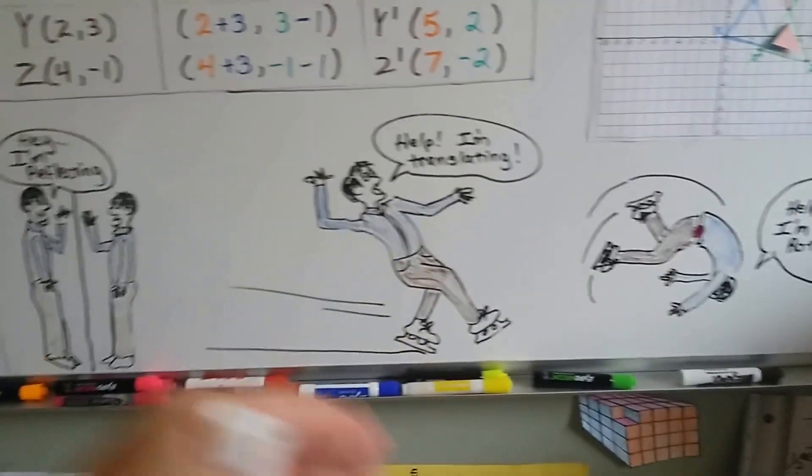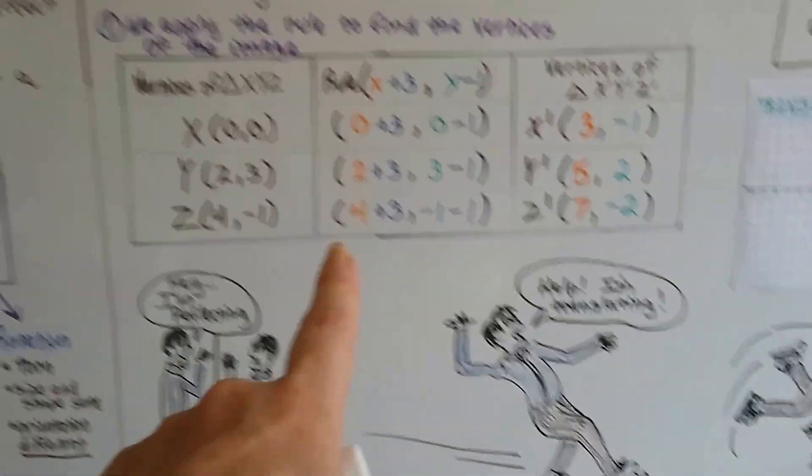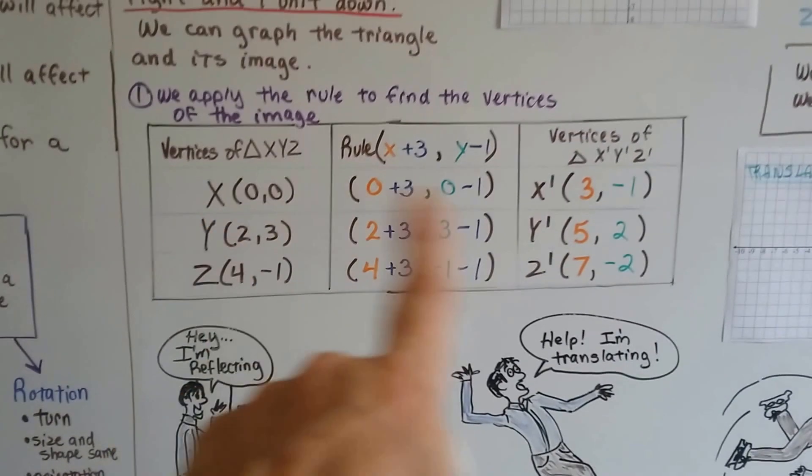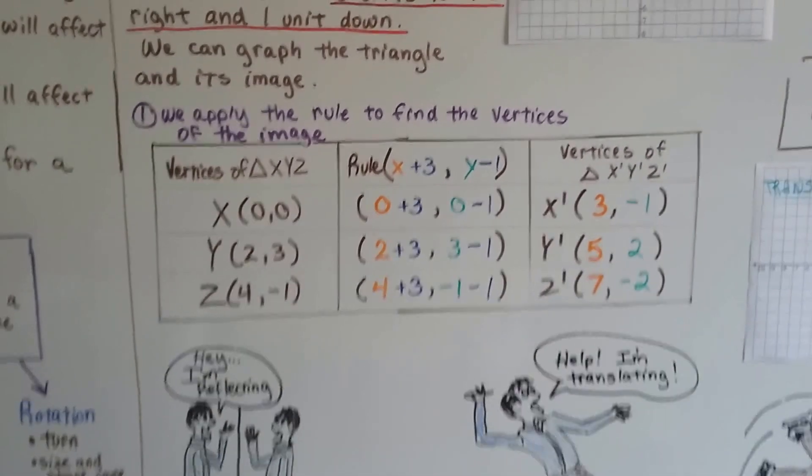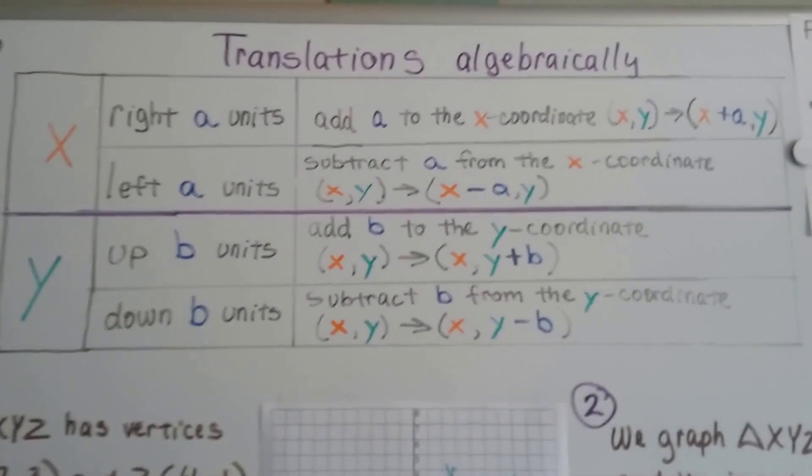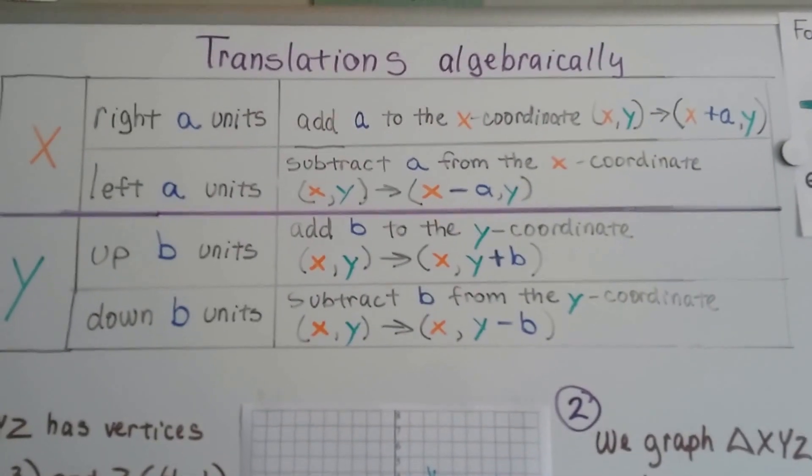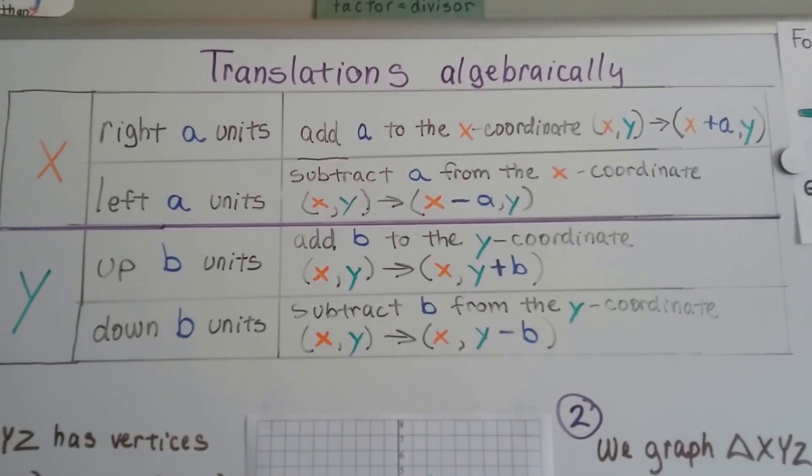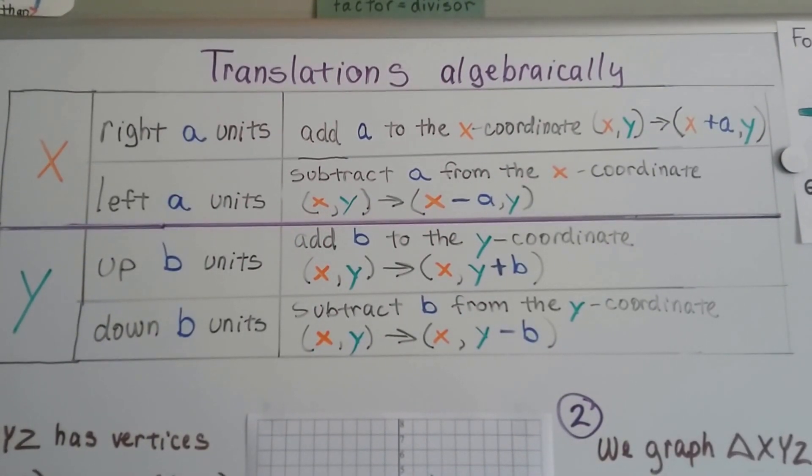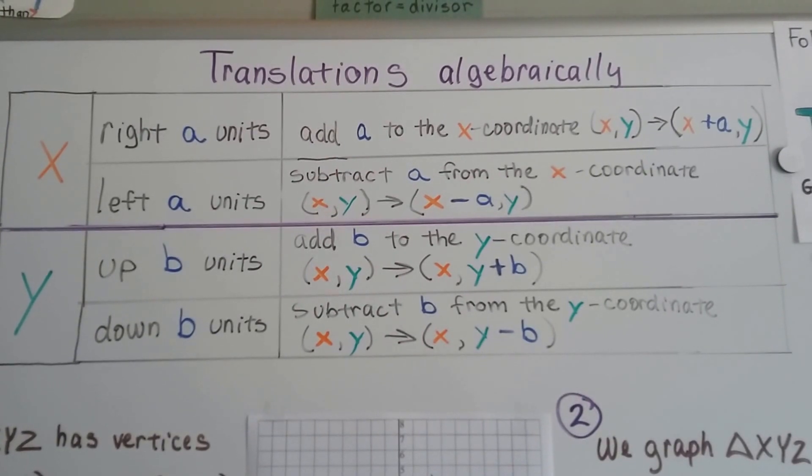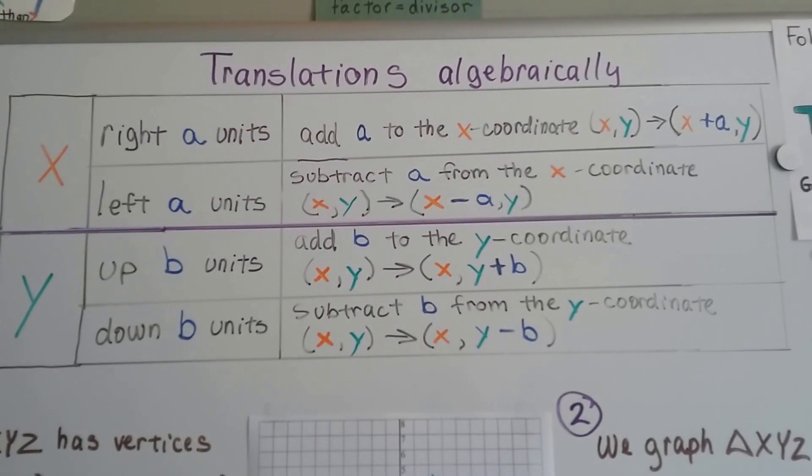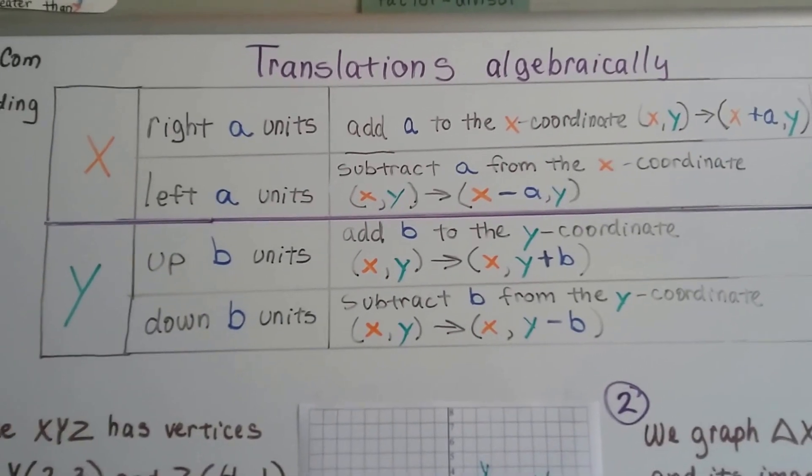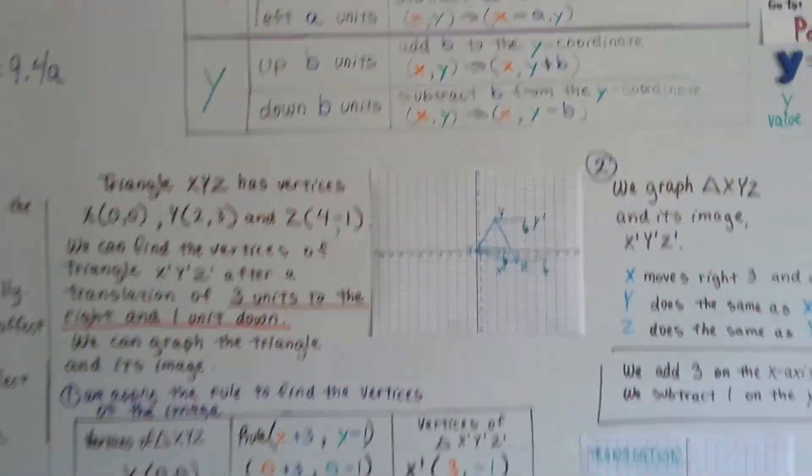He's translating. He's just sliding. And by using this rule, applying the rule to find the vertices of the image, we can do it algebraically. So this is really important right here. I'm going to freeze on this for a while, so if you want to pause it and copy this, you can. This is going to be very helpful for you. I hope this video was helpful.